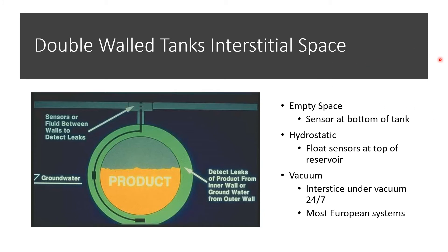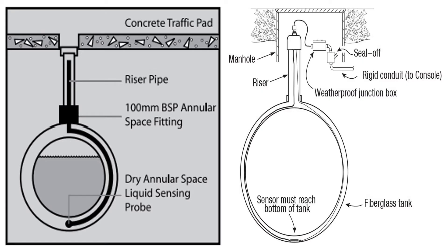These are the different kinds of interstitial monitoring: empty space, which I was just talking about; hydrostatic, which is some form of liquid in the interstitial space; vacuum; and pressurized systems where pressure and vacuum are pretty similar concepts and do kind of the same thing — I've seen vacuums used mostly overseas, on European sites or those in the Pacific area. Here are some diagrams of the different interstitial monitoring. With a dry interstitial space and the liquid sensing probe at the bottom, it can be a little challenging at times to make sure it works properly.